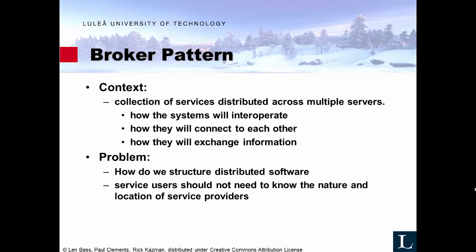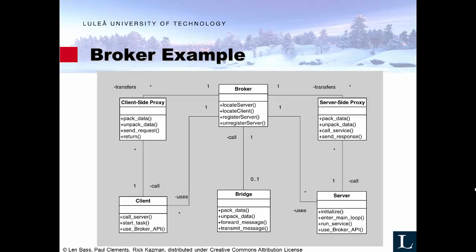The next pattern is the broker pattern, which is quite common in online systems where multiple services need to interoperate — when there is communication between distributed services and multiple servers. There is a broker that handles different communication: it can register available services, register clients, and make that connection. Whether the communication then happens peer-to-peer is not specified in the pattern itself. The broker basically acts as a service discoverer.